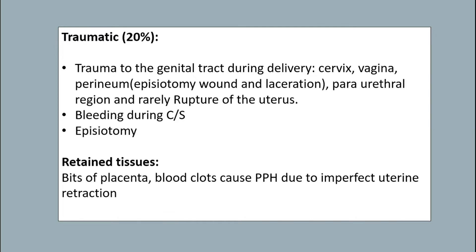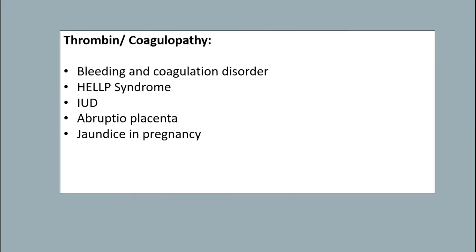Traumatic causes account for about 20 percent and include trauma to the genital tract during delivery such as cervix, vagina, perineum, and periurethral region, bleeding during caesarean section, and episiotomy. Retained tissue due to bits of placenta and blood clots cause PPH due to imperfect uterine retraction. Thrombin or coagulopathy includes bleeding and coagulation disorders, HELLP syndrome, IUD, abruptio placentae, and jaundice in pregnancy.